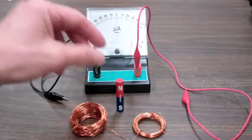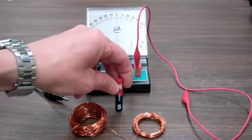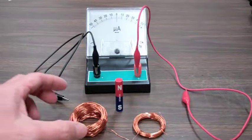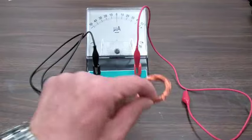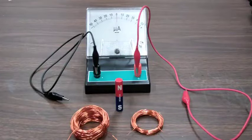I have an ammeter here, a magnet, and two coils. This coil has 100 turns and this coil has 25 turns.